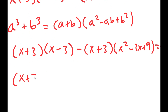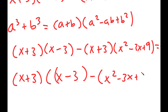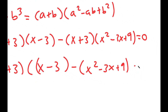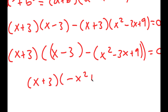Factoring out (x + 3), I get (x + 3) times [(x - 3) minus (x squared minus 3x + 9)] equals 0. This simplifies to (x + 3) times (negative x squared plus 4x minus 12) equals 0.